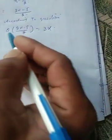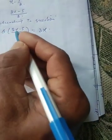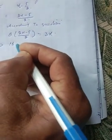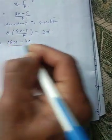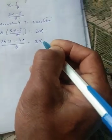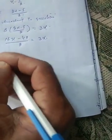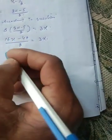This implies 8 into 2 is 16x, 8 into 5 is 40, minus 40 divided by 2 is equal to 3x. The 2 in the denominator will cancel.